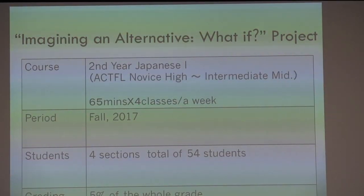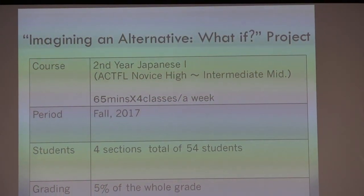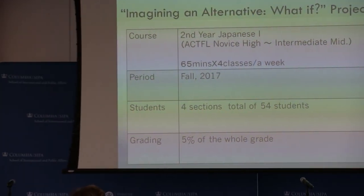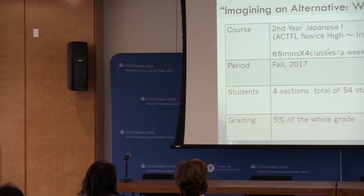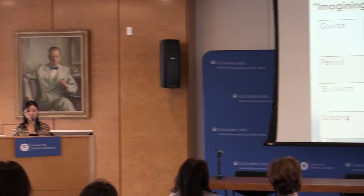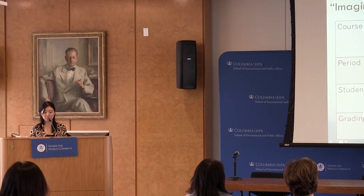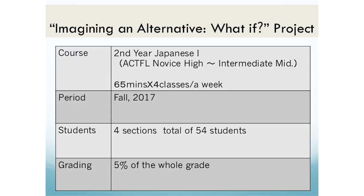For beginner or intermediate language classes, I'd like to introduce this project that we did with our second year Japanese classes, which is approximately novice high to intermediate proficiency level — imagining an alternative 'what if' project. The class met four times a week. This particular example was from fall semester 2017, with a total of four sections and 54 students participating. Five percent of the whole grade was set aside for this project.